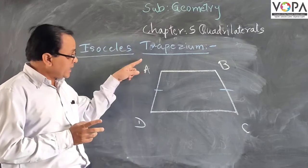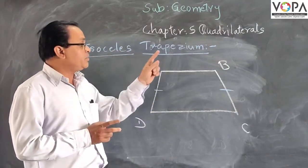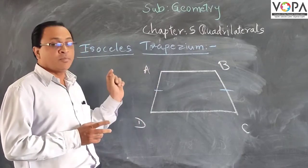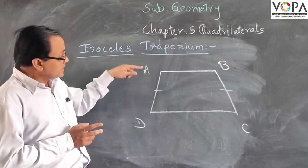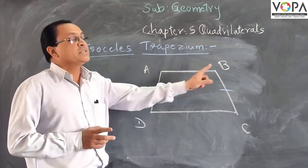Here side AD and side BC of this trapezium ABCD are non-parallel, and AD and BC are equal sides. Therefore, this is an isosceles trapezium.